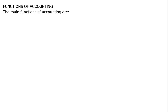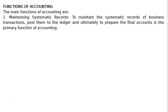Functions of Accounting. The main functions of accounting are maintaining systematic records. To maintain the systematic records of business transactions, post them into the ledger, and ultimately to prepare the final accounts is the primary function of accounting. This is the first function.